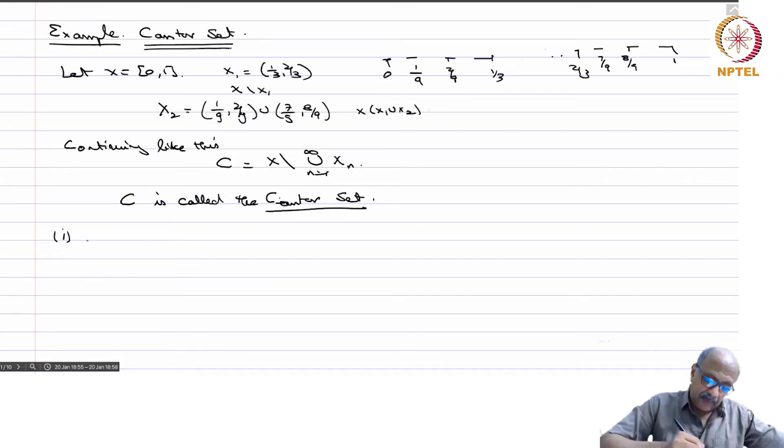First point: xn is open because it is union of open intervals, so it is open. And therefore this implies that union of open intervals is also open, so C is closed.